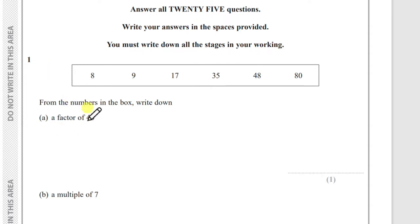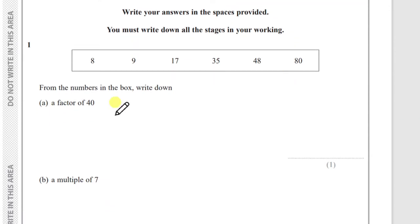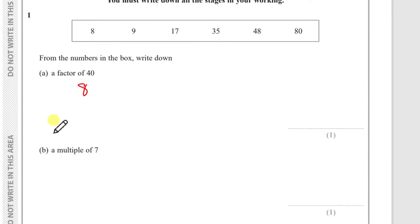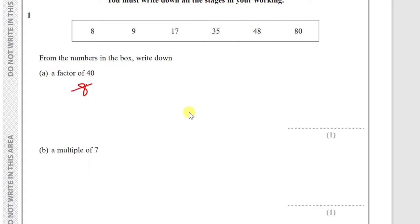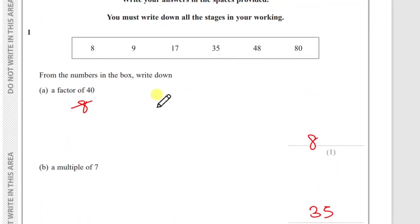Question 1: from the numbers in a box, write down (a) a factor of 40. To find a factor of 40, two numbers multiply to make 40 — I can think of 8 times 5, so 8 is one of them. (b) A multiple of 7 — something in the 7 times table. 35 works because 7 times 5 is 35. So the answers are 8 and 35.